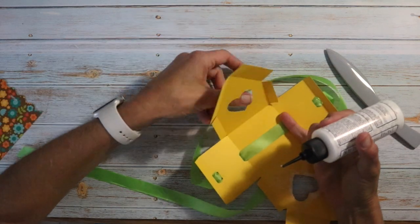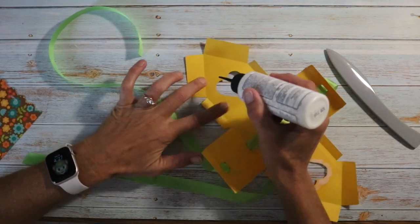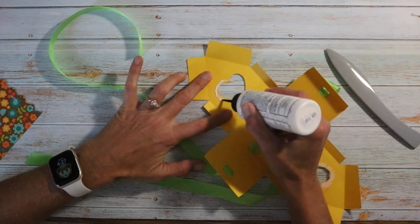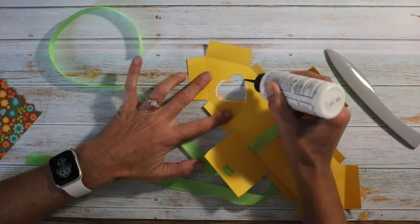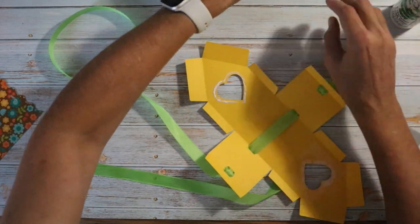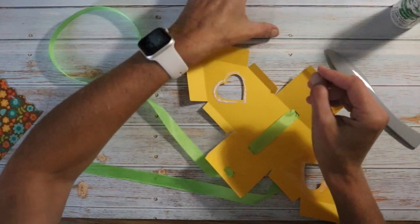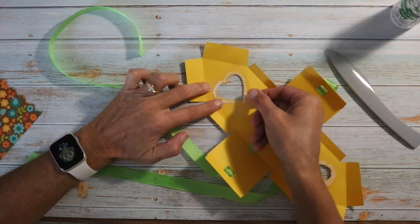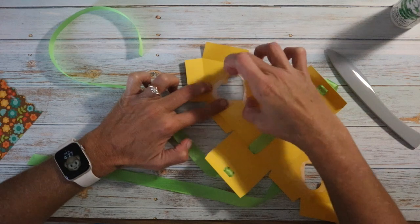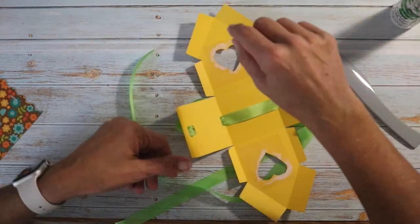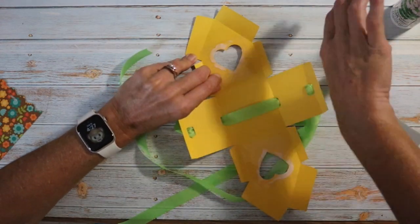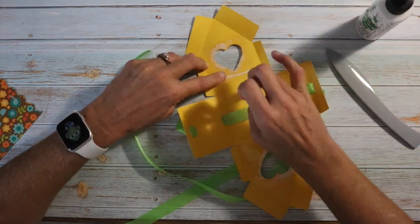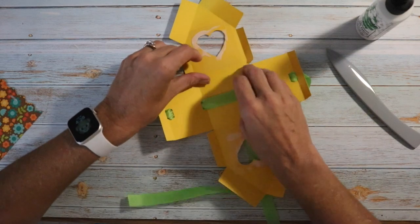Flip it over and do this side. Okay, and our second piece. Okay, now I'm going to come back to this piece and just lift it up on the bottom and just put a little bit more glue down there just to make sure it stays in place. I'm going to do the same for this one.